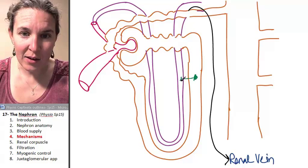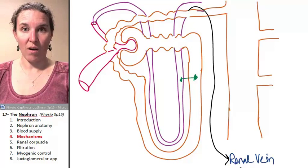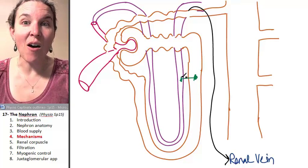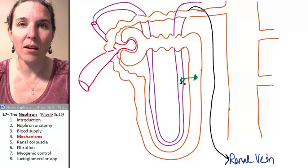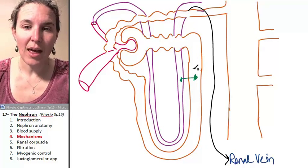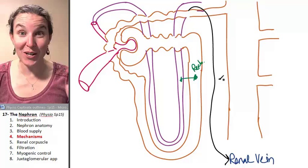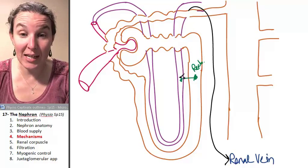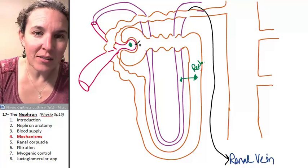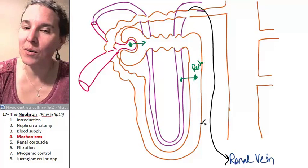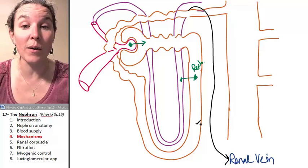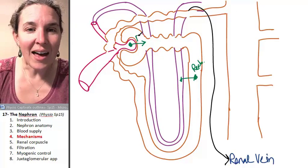I make it go there. It started in the descending loop of Henle, and now it is in the vasa recta. What did I just do? That's reabsorption. Do you agree? We just reabsorbed it into the blood. If I have something here in the glomerulus, and now it moves into the nephron, that is filtration.